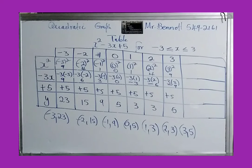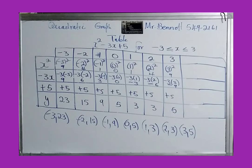Now you would plot these points on the graph, and that would be your graph of x squared minus 3x plus 5. Remember to label the graph. Thanks for watching guys, and I'll see you in the next video.